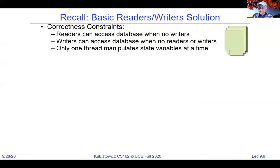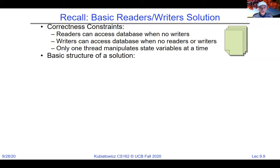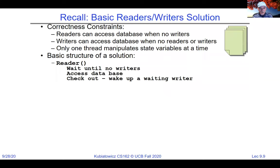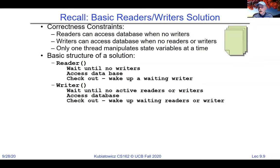Let's look at the basic reader-writer solution. The correctness constraints are: readers can access the database as long as there aren't any writers; writers can access the database as long as there are no readers or other writers; and only one thread can manipulate the state information. The reader says wait until there's no writer, access the database, check out, and wake up a waiting writer if there is one. The writer says wait until there are no readers or writers, access the database, check out, and maybe wake up a waiting reader or writer.